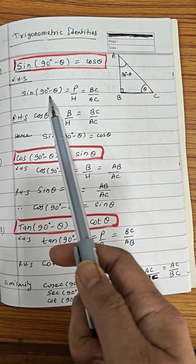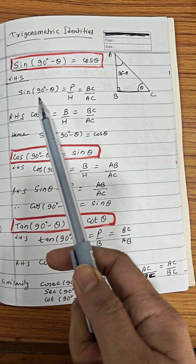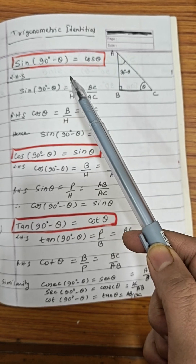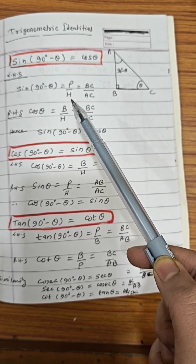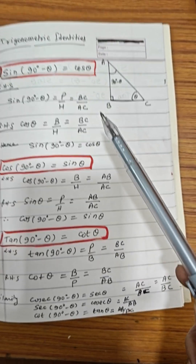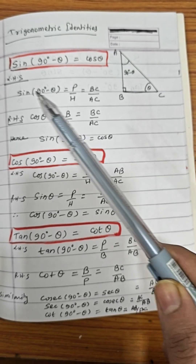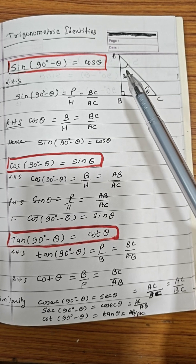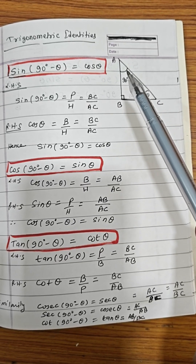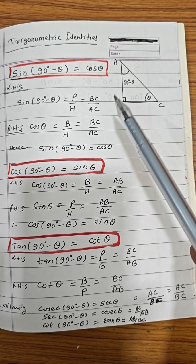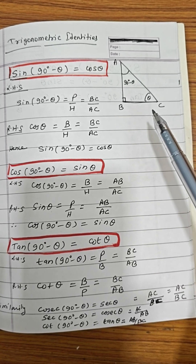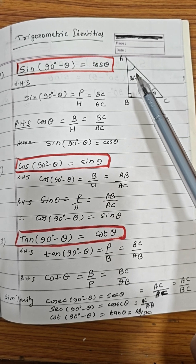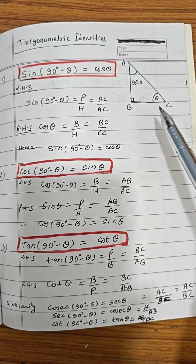Now sin(90° - θ). You know that for trigonometric ratios, sin θ is perpendicular upon hypotenuse. So sin(90° - θ) will also be perpendicular upon hypotenuse. Now for the angle 90° - θ, AB is the base and BC is the perpendicular, and AC is the hypotenuse. So P/H for 90° - θ will be BC upon AC.